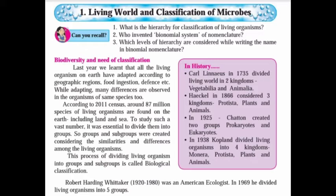Linnaeus in 1735 divided living organisms into two kingdoms: Vegetabilia and Animalia. Haeckel in 1866 considered three kingdoms: Protista, Plants, and Animals. In 1925, Chatton created two groups: prokaryotic and eukaryotic, based on cell structure. In 1938, Copeland divided living organisms into four kingdoms: Monera, Protista, Plants, and Animals.